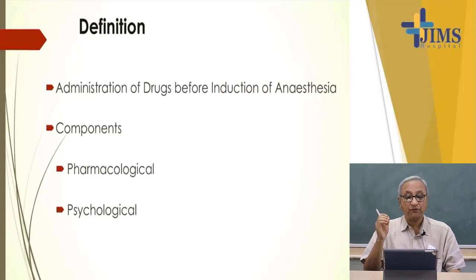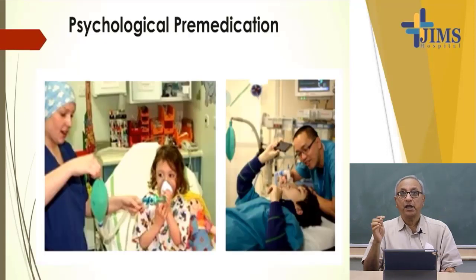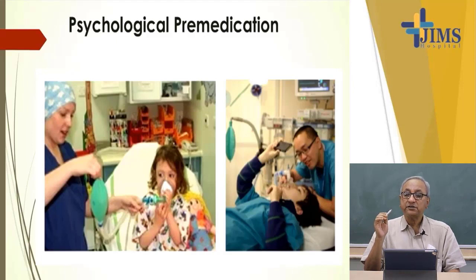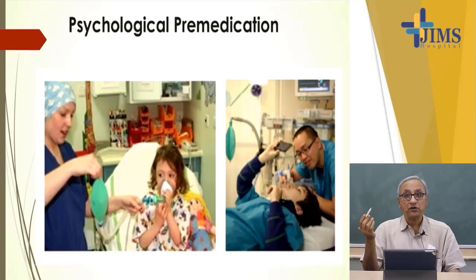The components of premedication can be divided basically into two parts: one is the pharmacological component and one is the psychological component. When a patient is subjected to surgery or is awaiting surgery, the patient automatically becomes very apprehensive of death, of pain, and of other co-morbidities. They think that the operation will lead either to death, pain, or something untoward — that they may not wake up at all.